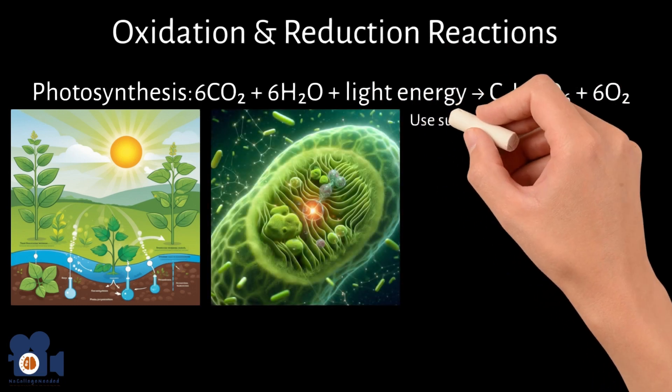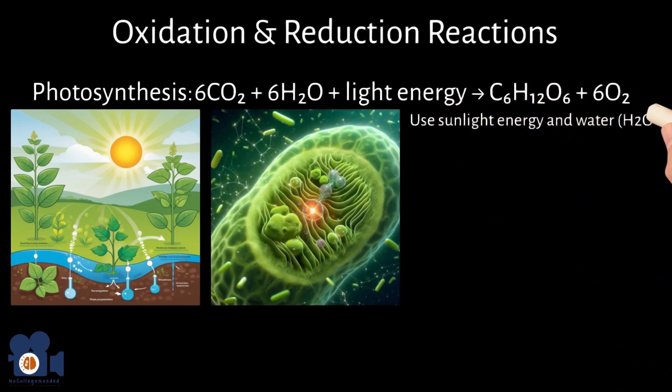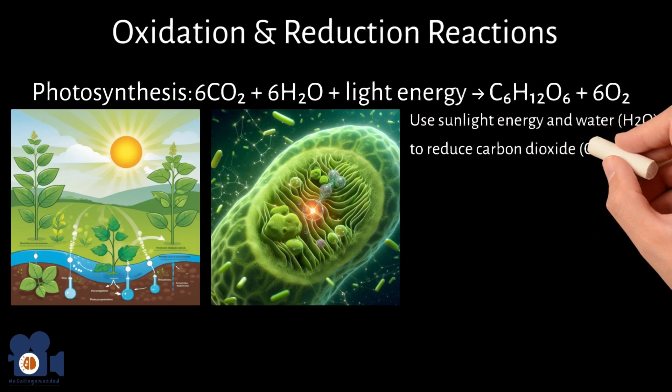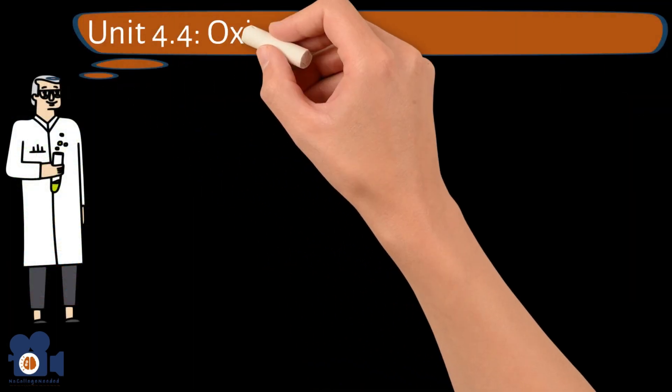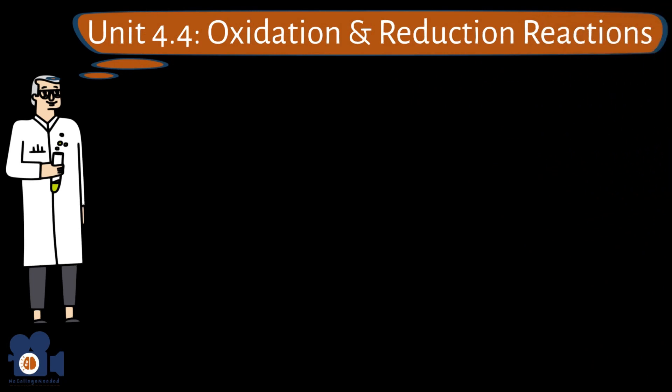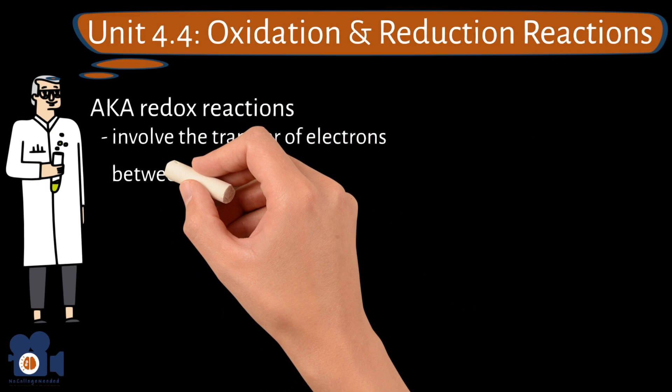Chloroplasts of plants use sunlight energy and water to reduce carbon dioxide to form glucose, C6H12O6. Essentially, oxidation and reduction reactions, also known as redox reactions, involve the transfer of electrons between two chemical species.